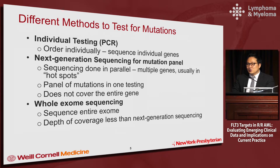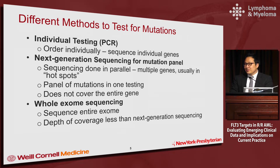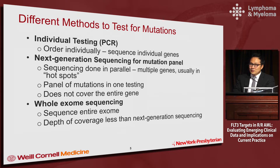A panel may include something like 440 plus genes and you get information on a lot of genes. It doesn't cover the entire exome. Whole exome sequencing is done in a research setting in academic places where you can actually sequence an entire exome, but this is not usually done commercially. In academic settings you can also sequence the entire genome — whole genome sequencing — which is rarely done except in special circumstances.